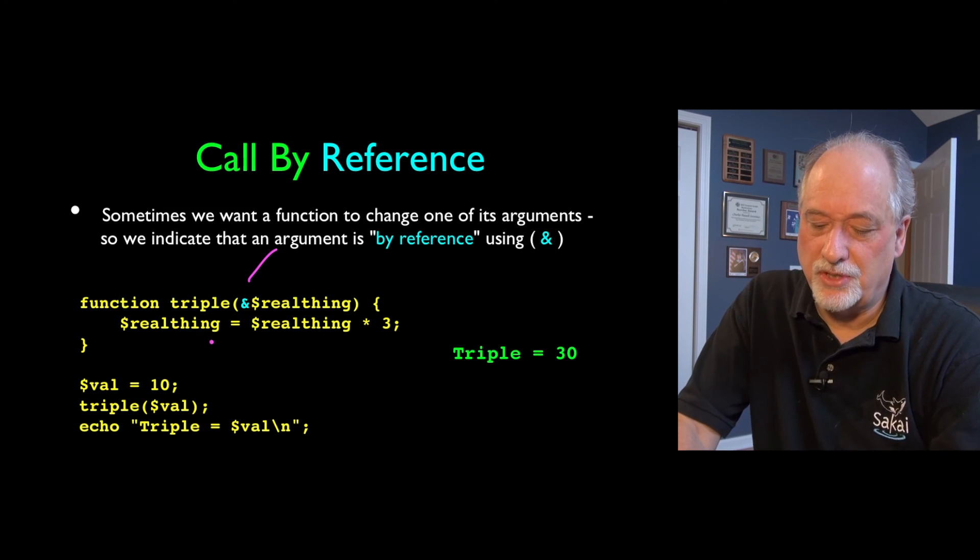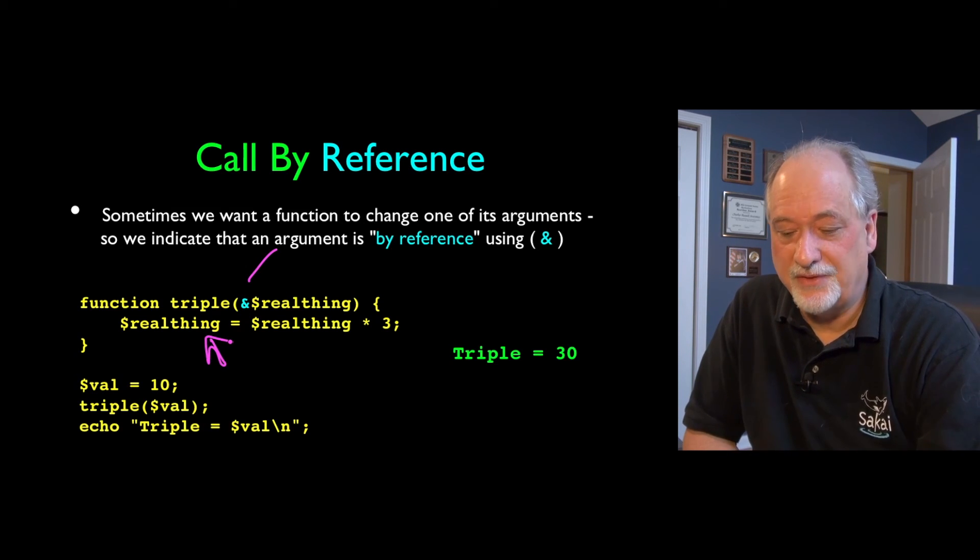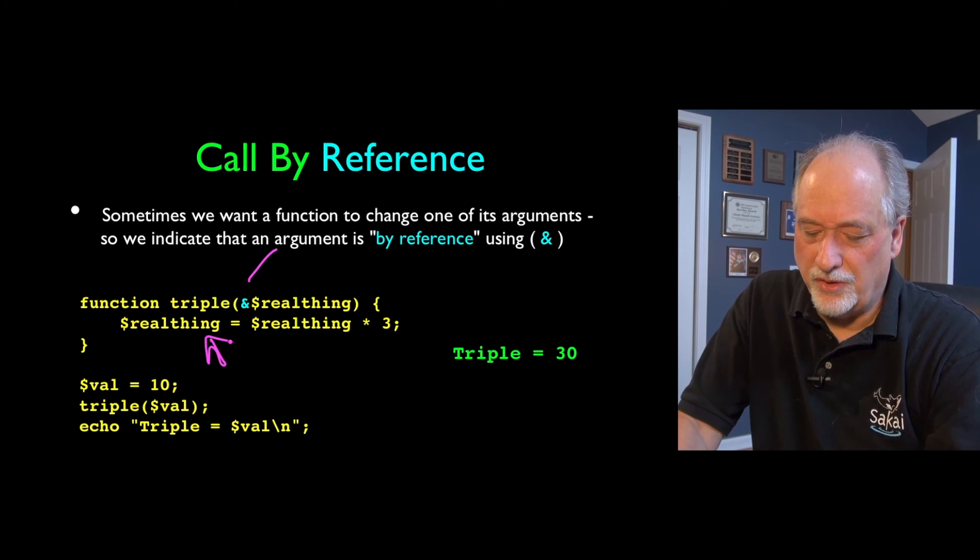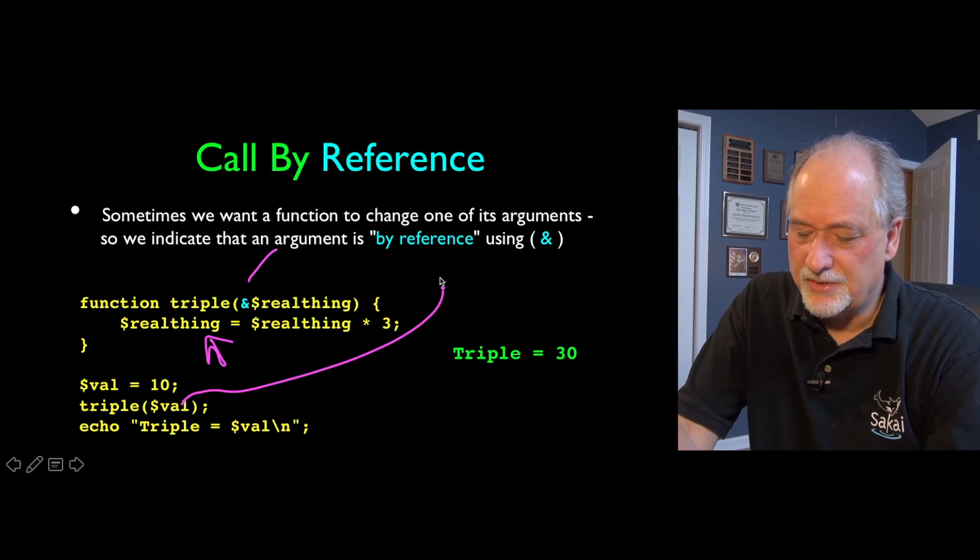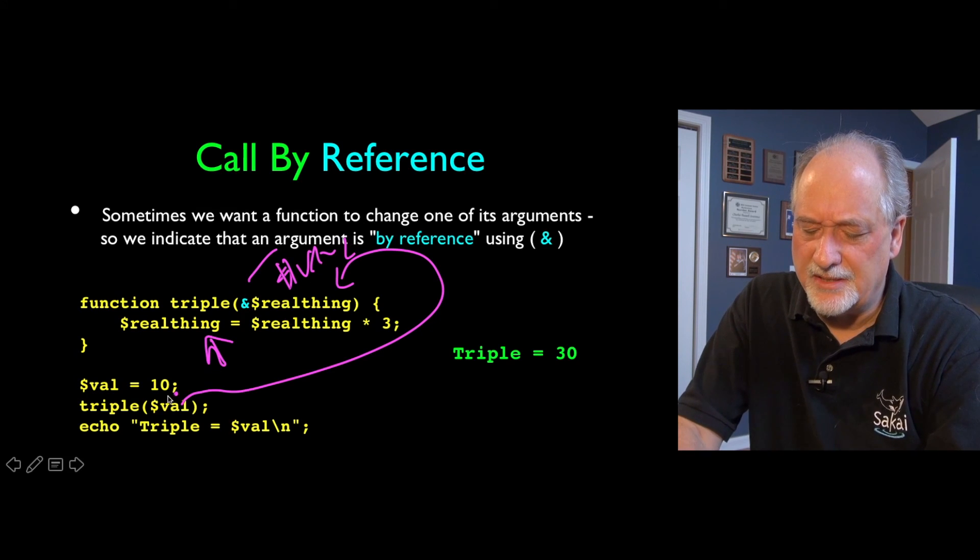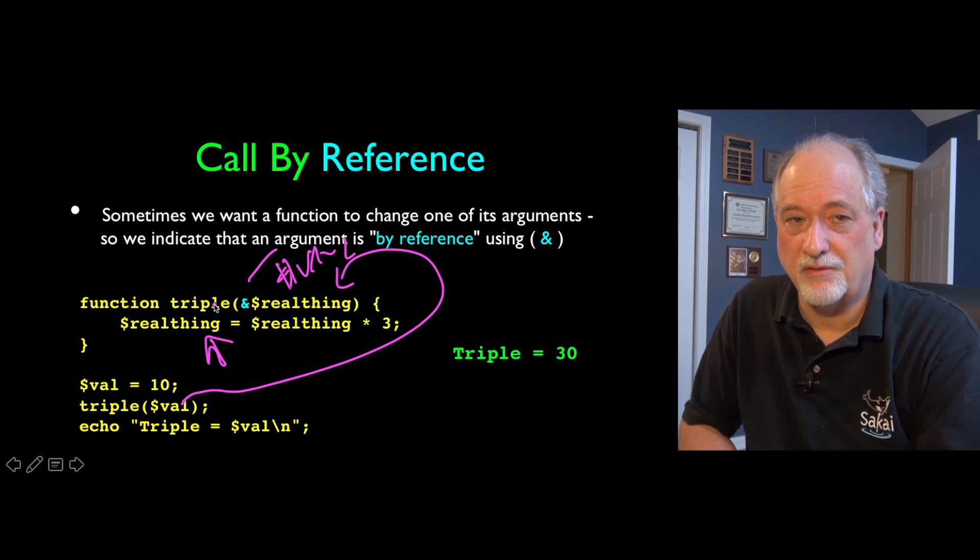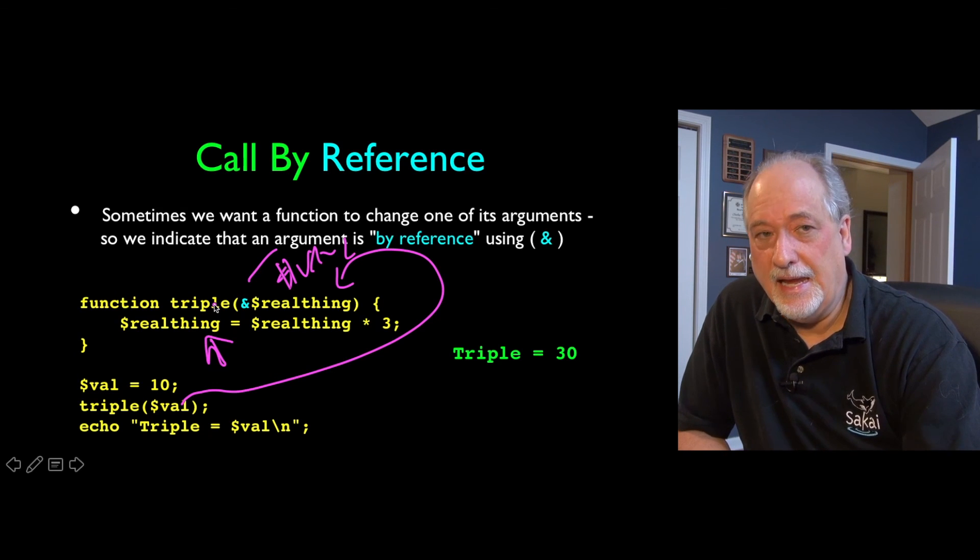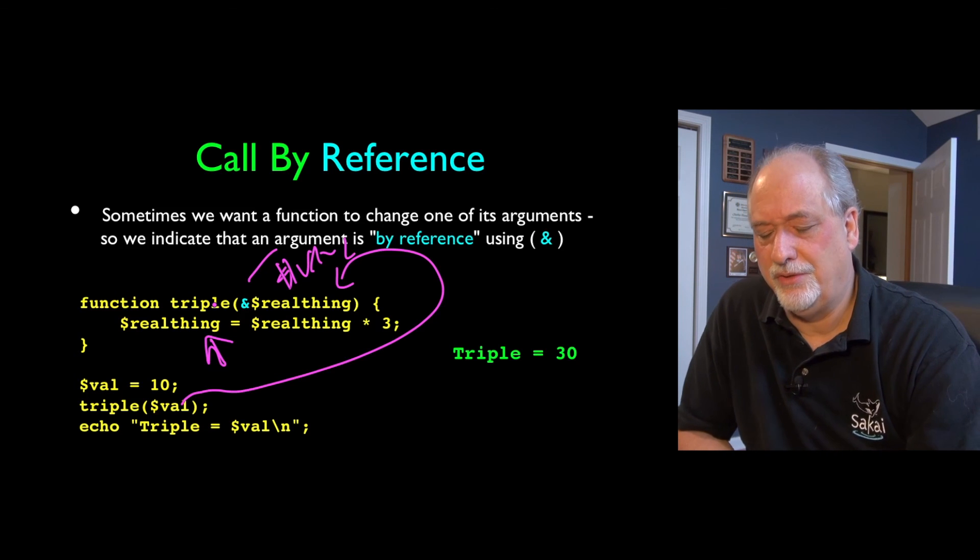And when you want to change the first parameter, you just put it over here on the left hand side. And so real thing is a 10, so val comes in as a 10, but it's not only 10, but it's also dollar val. So now dollar real thing is equivalent within the function to dollar val. It's not an alias to the value of dollar val. It is equivalent to.